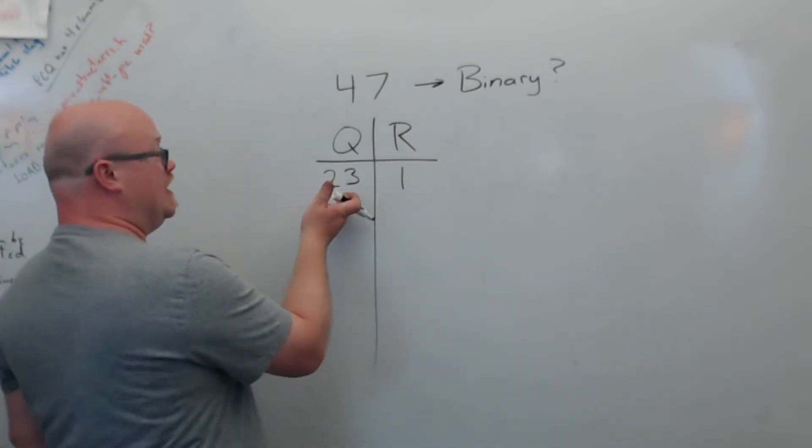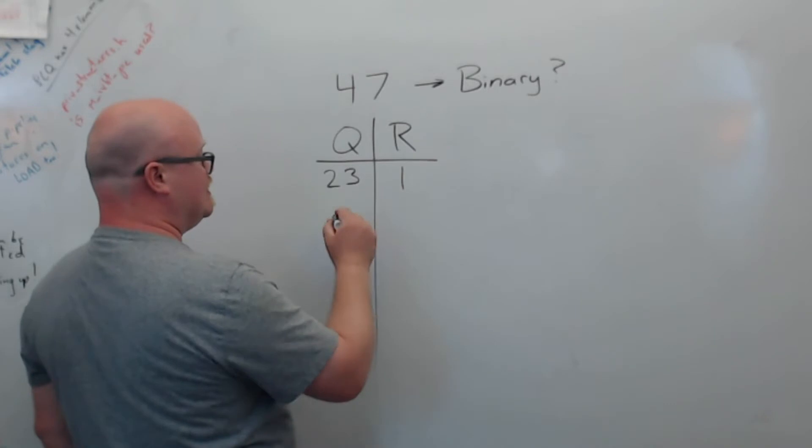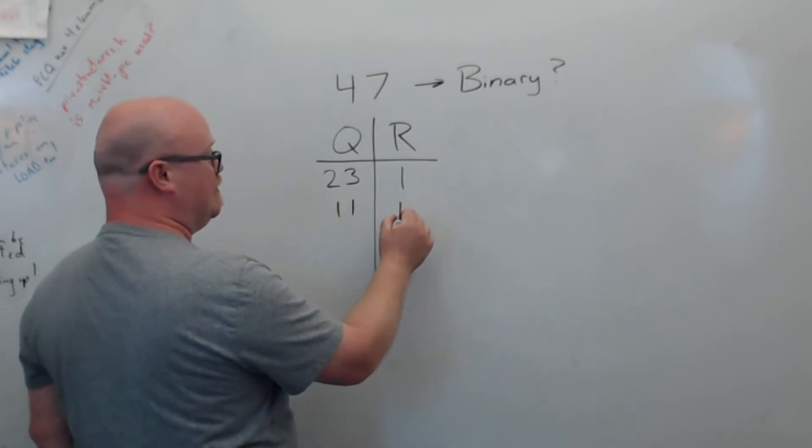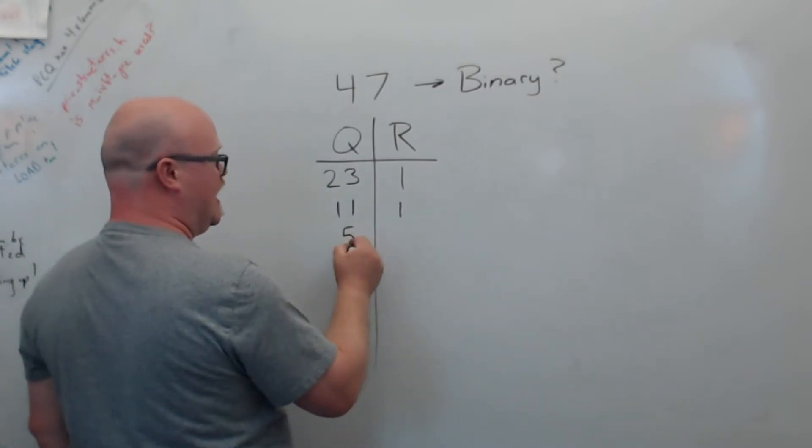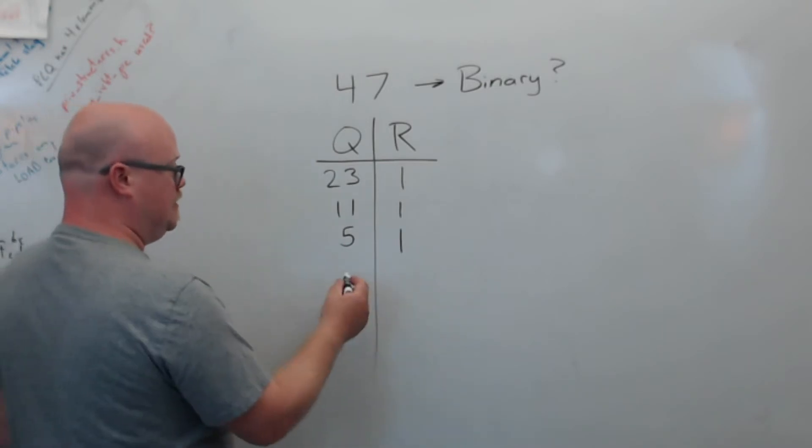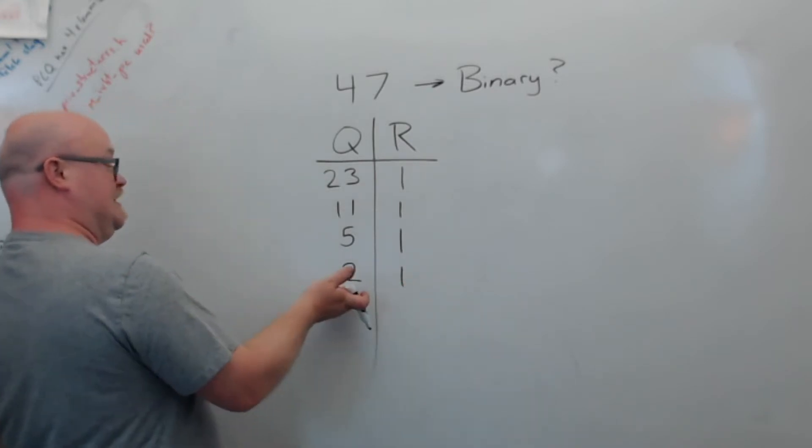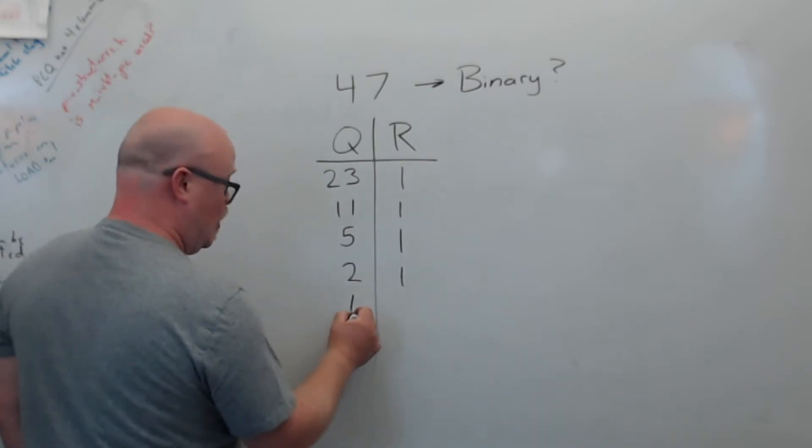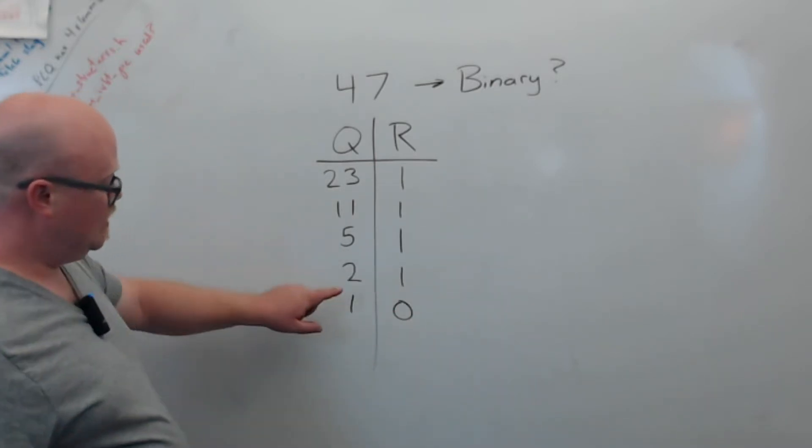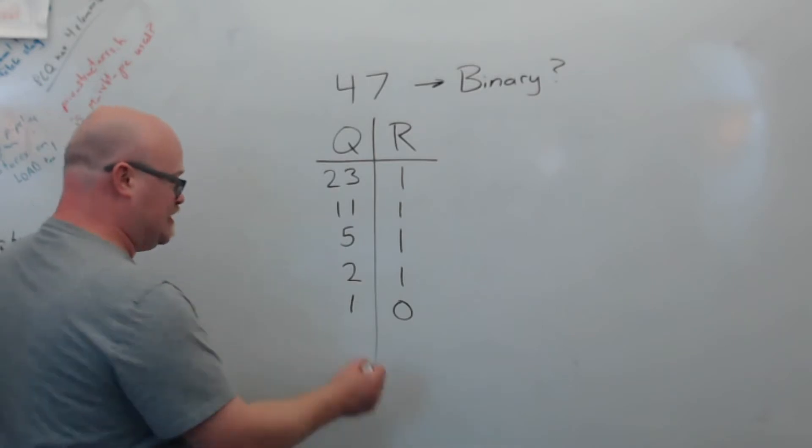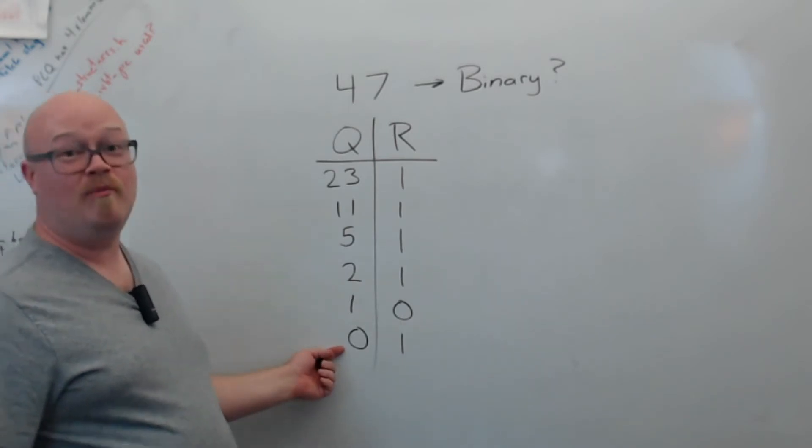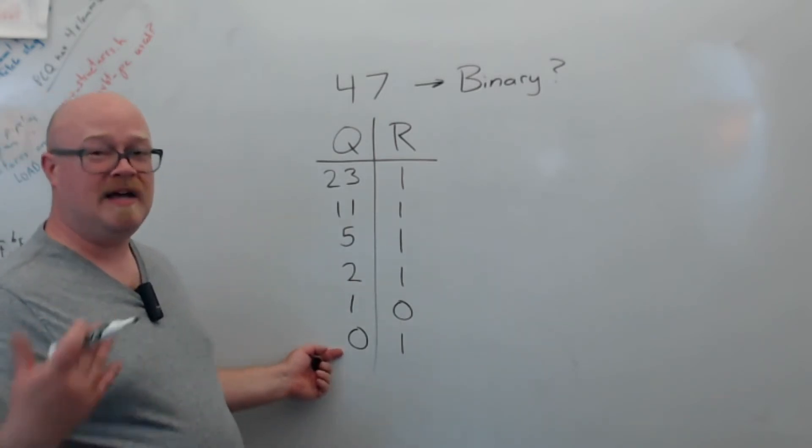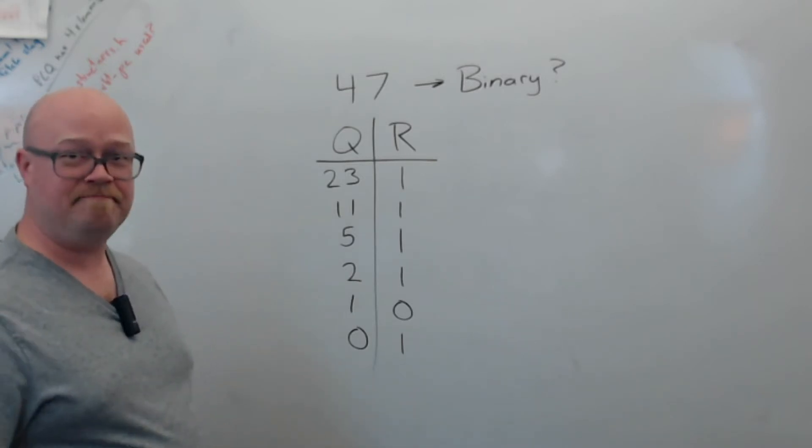So now I need to do 23 divided by 2. So that's going to give me 11 with a remainder of 1. 11 isn't 0, so I'll divide it by 2. That's 5 with a remainder of 1. 5 isn't 0, divide it by 2. That's 2 remainder of 1. 2 isn't 0, divide it by 2. 2 divided by 2 is 1 with a remainder of 0. 1 is not 0, so I'll divide it by 2. And that's a 0 with a remainder of 1. Now I don't want to divide 0 by 2. I stop here because 0 divided by 2 will give me 0 forever and ever and ever and ever again. So we just stop.